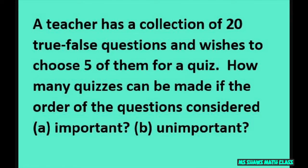Hi everyone! A teacher has a collection of 20 true-false questions and wishes to choose five of them for a quiz. How many quizzes can be made if the order of the questions considered is A. Important, B. Unimportant.